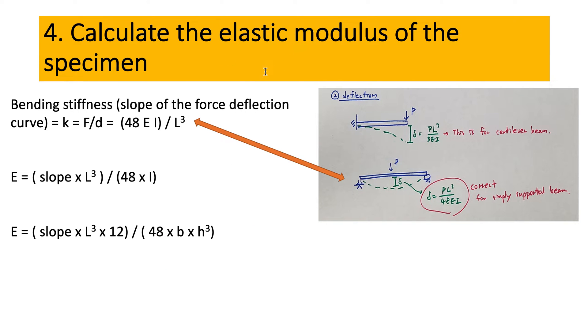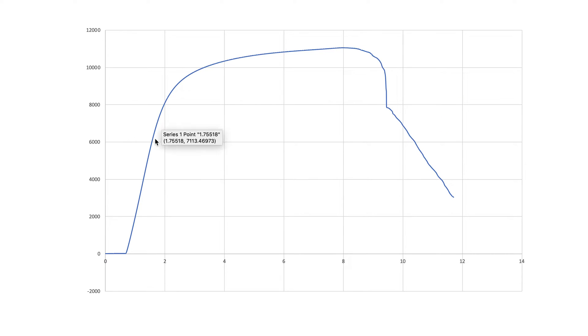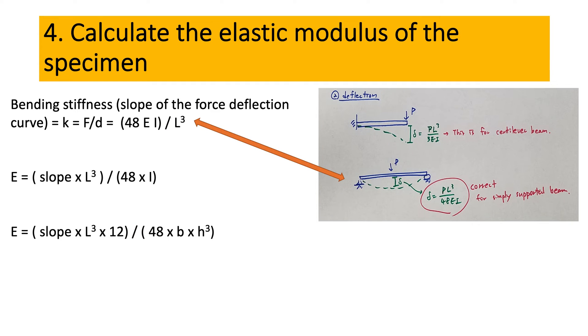To calculate the elastic modulus of the specimen, we have something called bending stiffness. And bending stiffness is not the elastic modulus. It's the slope of the force deflection curve, which is this one. So this curve here, this slope, that's what we call the bending stiffness.